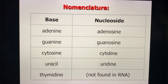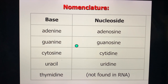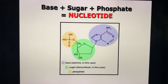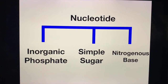Some nomenclature from the textbook: the bases are adenine, guanine, cytosine, uracil, and thymine. Once you add a sugar, it becomes a nucleoside — so adenine becomes adenosine, guanine becomes guanosine, cytosine becomes cytidine, and uracil becomes uridine. A nitrogenous base plus a sugar plus a phosphate together form a nucleotide. The components of a nucleotide are an inorganic phosphate, a simple sugar, and a nitrogenous base.